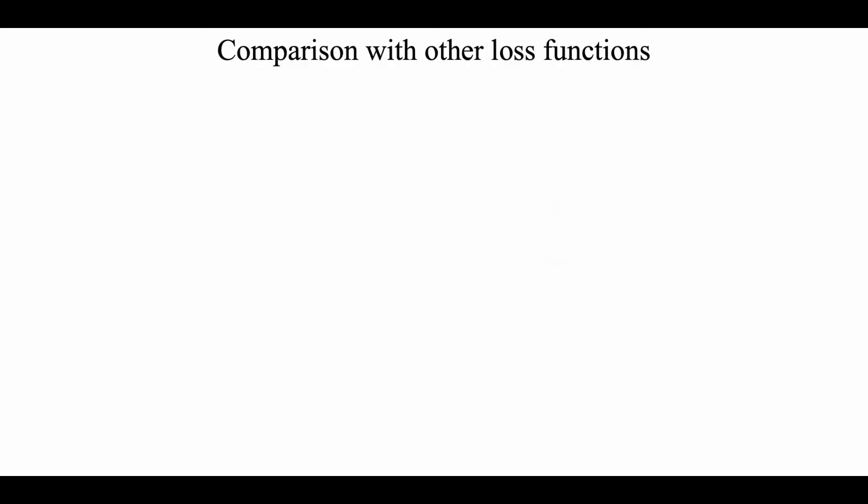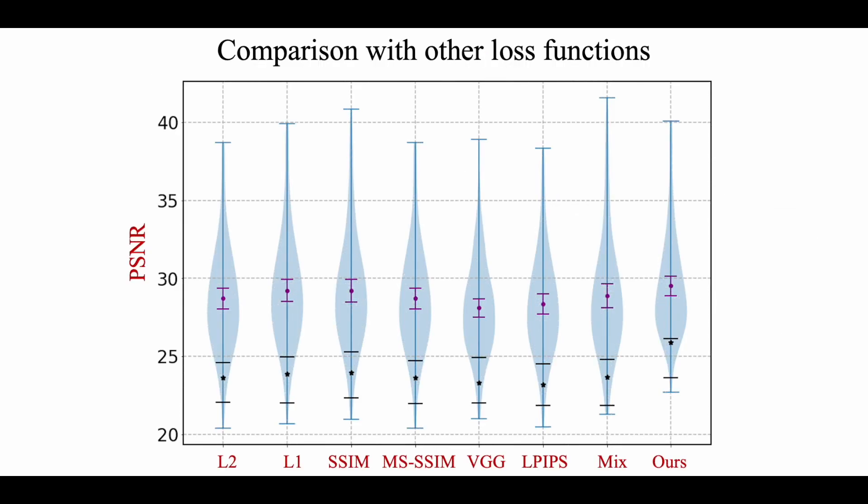We show quantitative comparison of our loss with competing loss functions in a violin plot in terms of PSNR. Our loss function drastically reduces the number of worst-performing images, even if the performance in terms of PSNR is not that substantial. This performance is consistent across different applications and datasets.